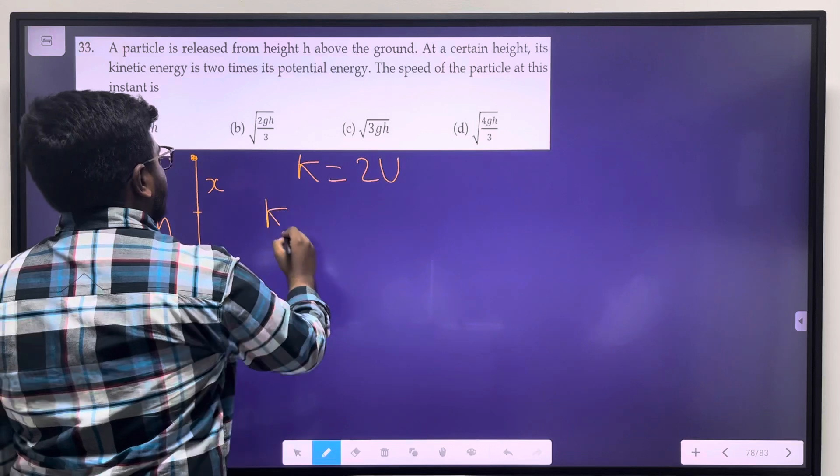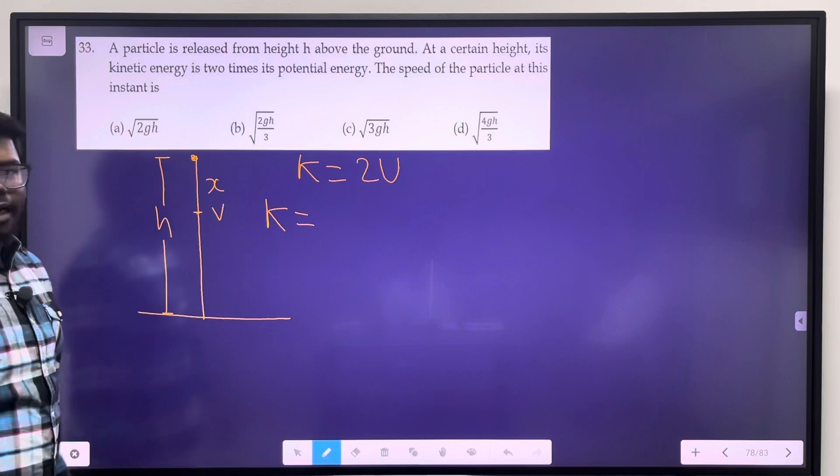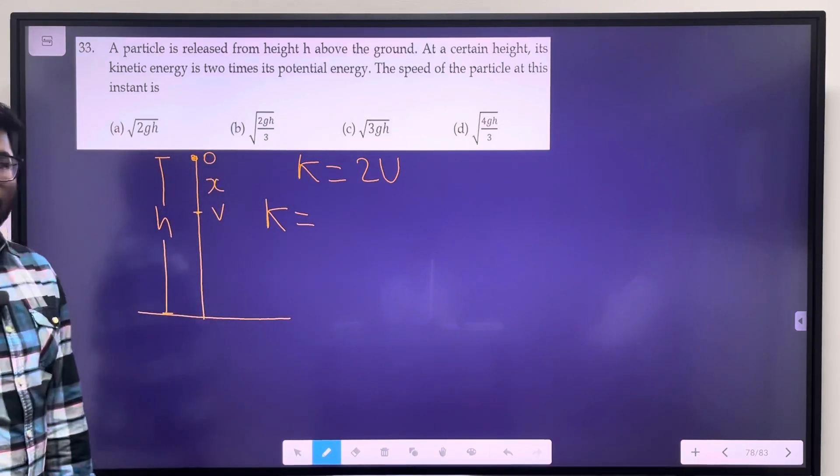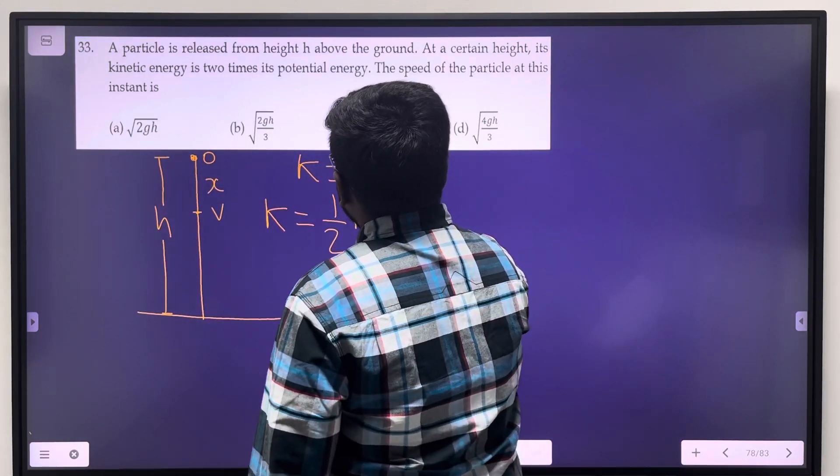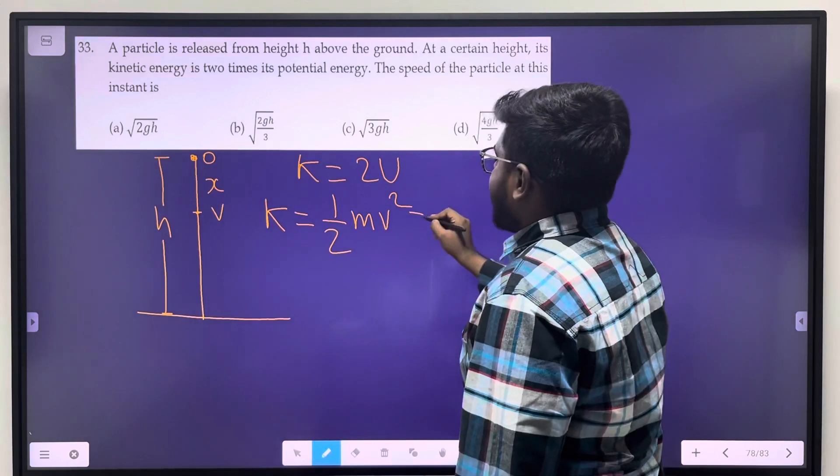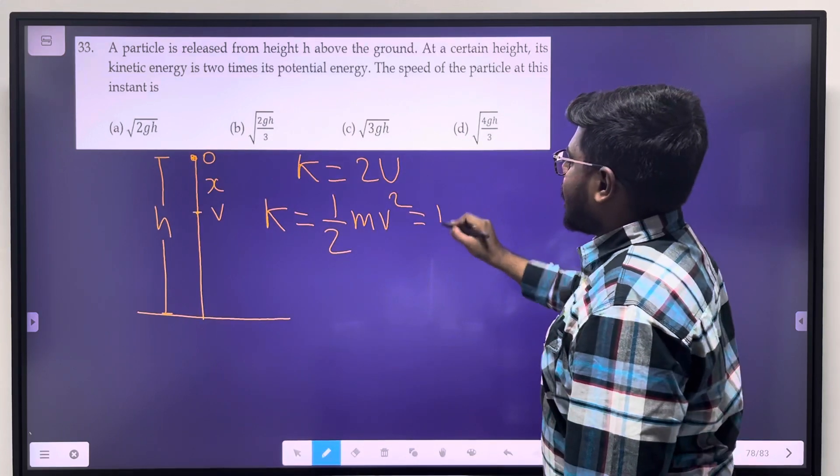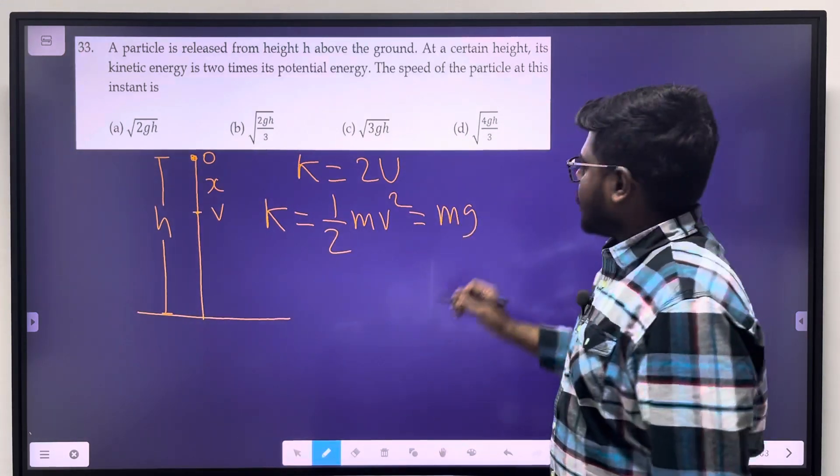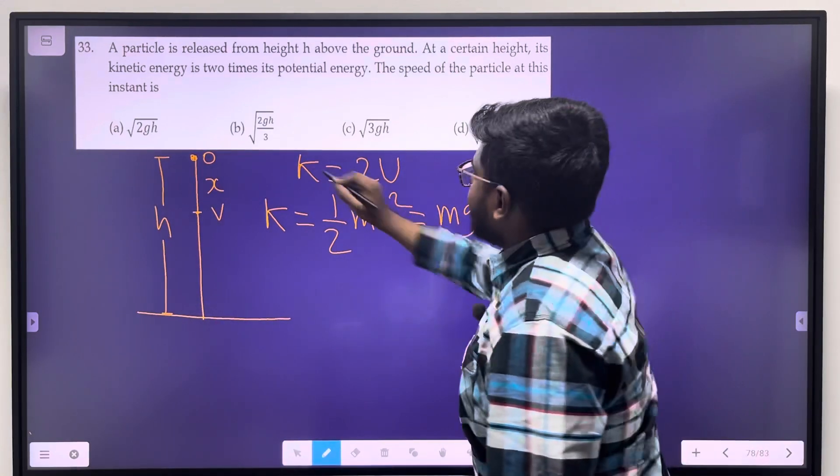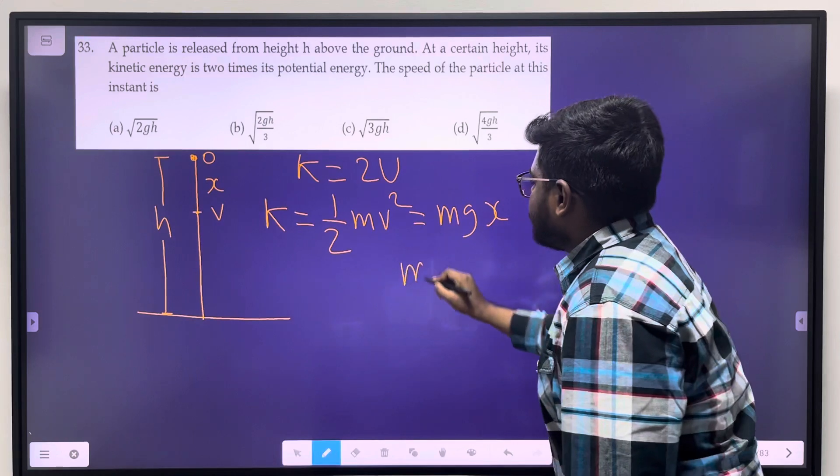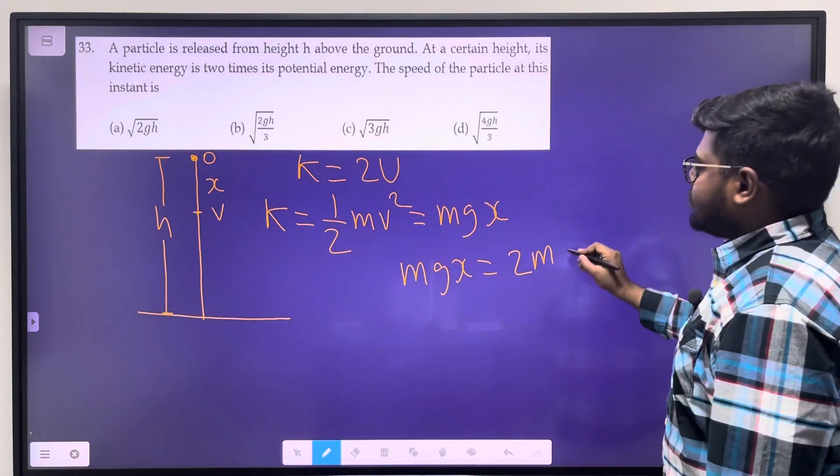Kinetic energy is 1/2 mv². Kinetic energy equals work done by gravitational force, which is force into displacement. So, work done by gravitational force. Now, kinetic energy mgx equals 2 times potential energy, which is mg.